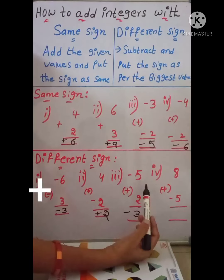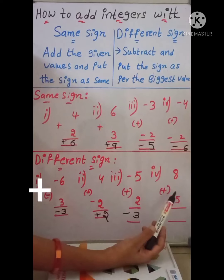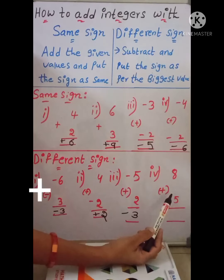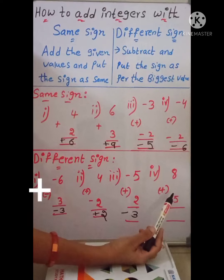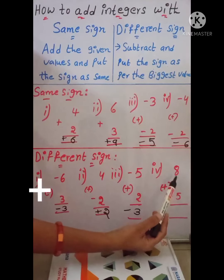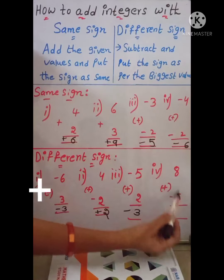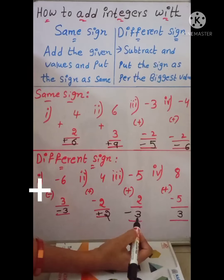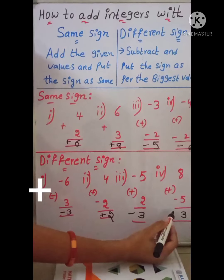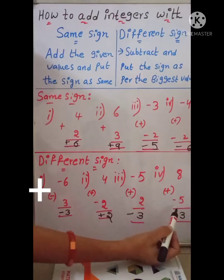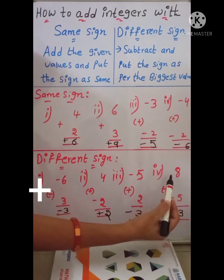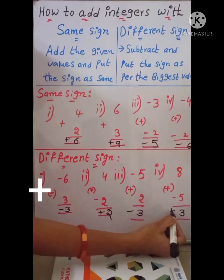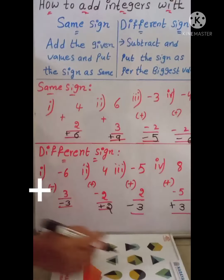The fourth example is plus 8 minus 5. These two numbers have different signs. Just subtract the smaller number from the bigger number: 8 minus 5 equals 3. What about the sign? Put the sign of the biggest value. Here, 8 is the biggest value and it has the positive symbol, so put the positive sign. The answer is positive 3. Thank you.